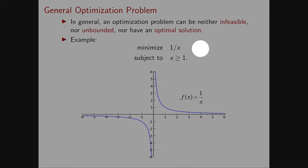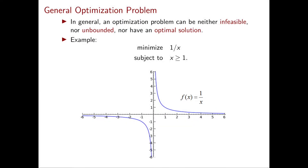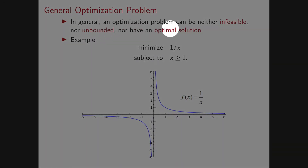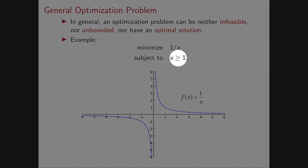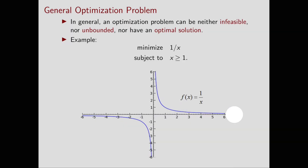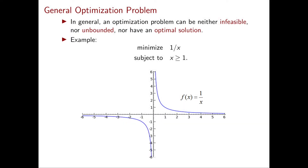This problem is feasible since the feasible region is x ≥ 1. It is not unbounded because the objective function cannot become arbitrarily small — there's no feasible point with objective value smaller than 0. Finally, it doesn't have an optimal solution because for any point you pick, there's always a better one by adding any positive amount. However, this is not a linear programming problem, because the objective function is nonlinear.